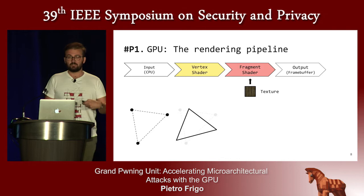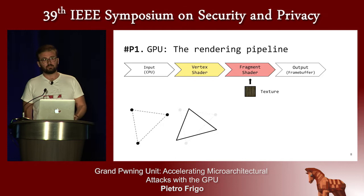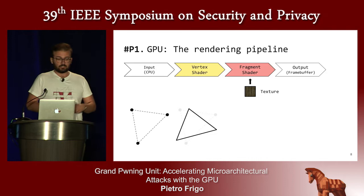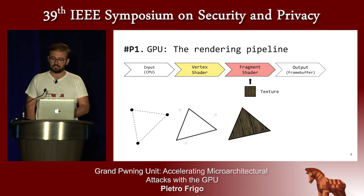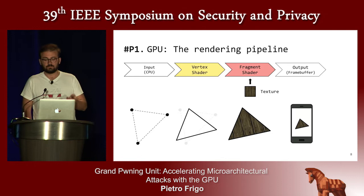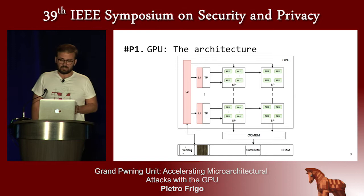When running the fragment shader, the purpose is usually to color the pixels using textures — for instance to draw a wooden chair. The fragment shader can access external data in the form of textures. Once you get the data, you run the fragment shader, get your output as a rendered triangle, and eventually send it to the frame buffer, which is the screen of your smartphone.